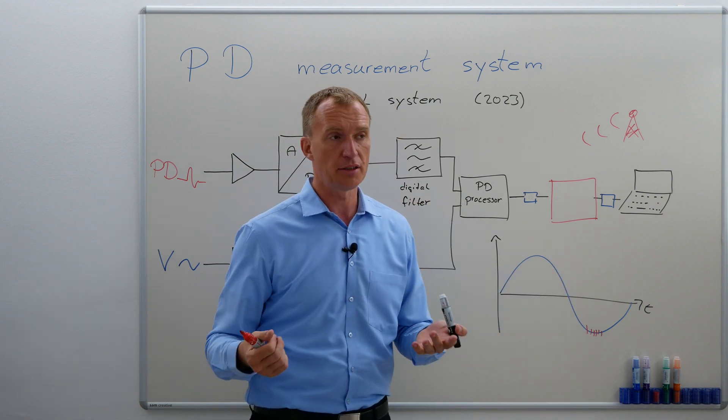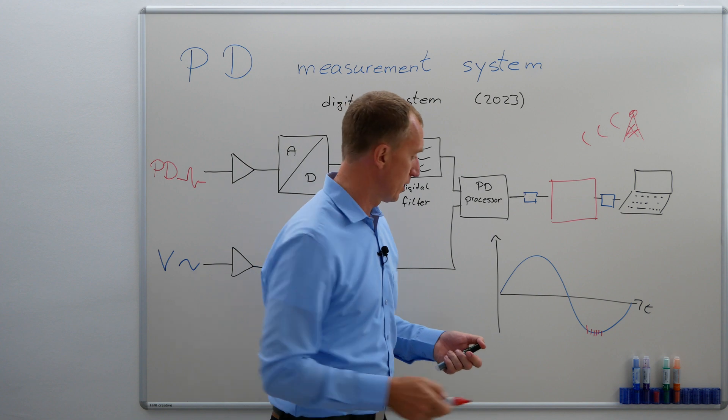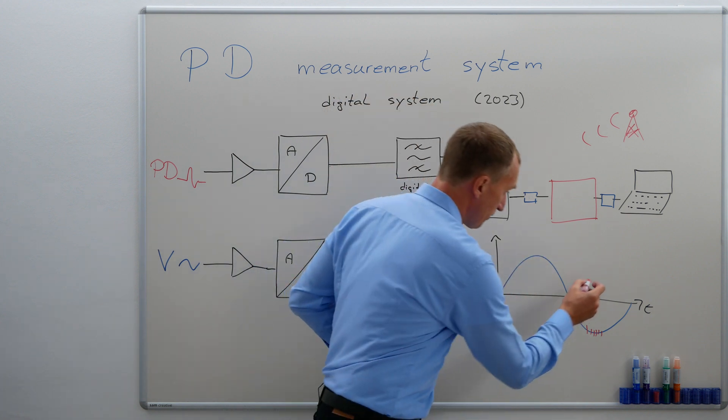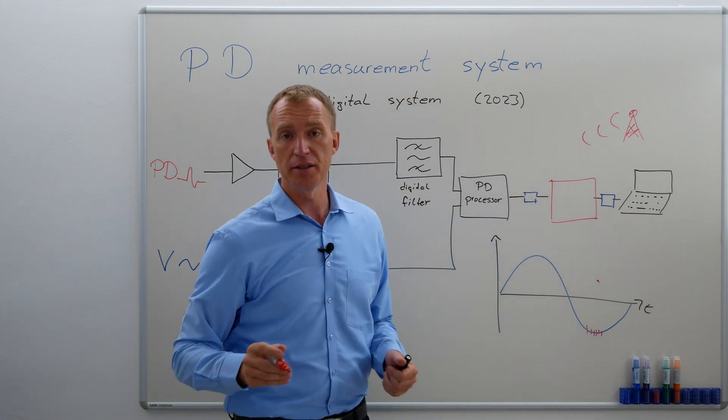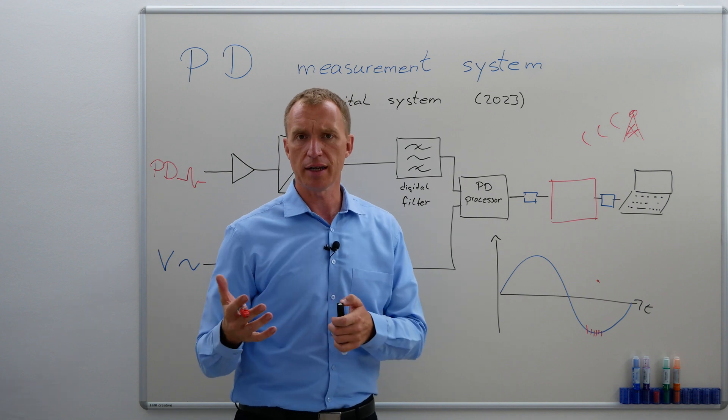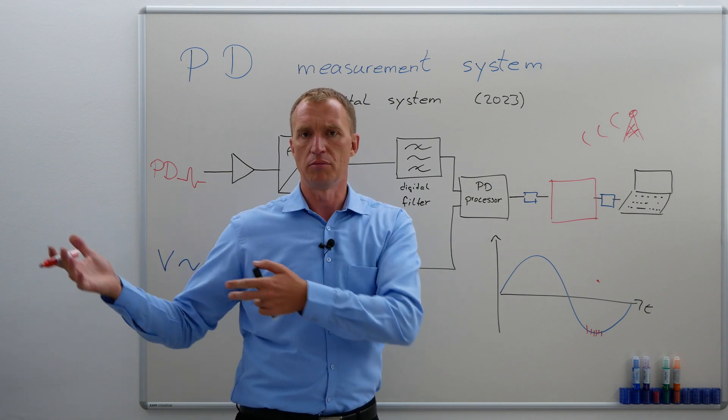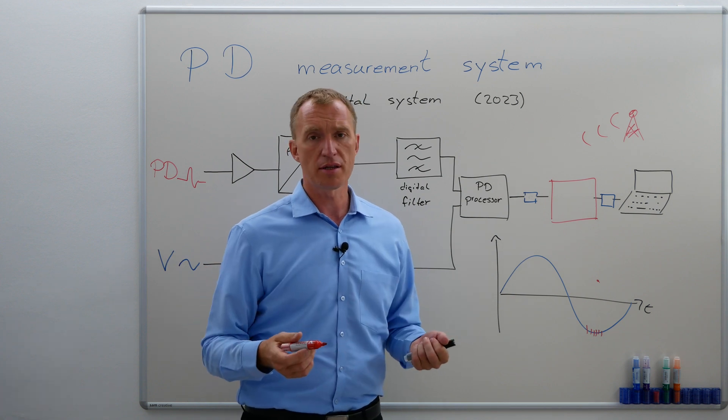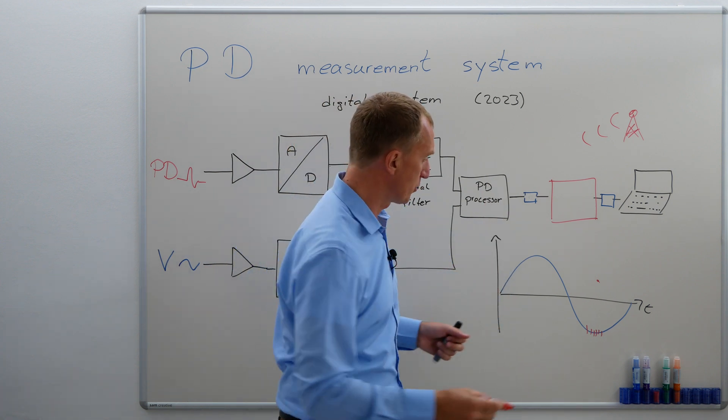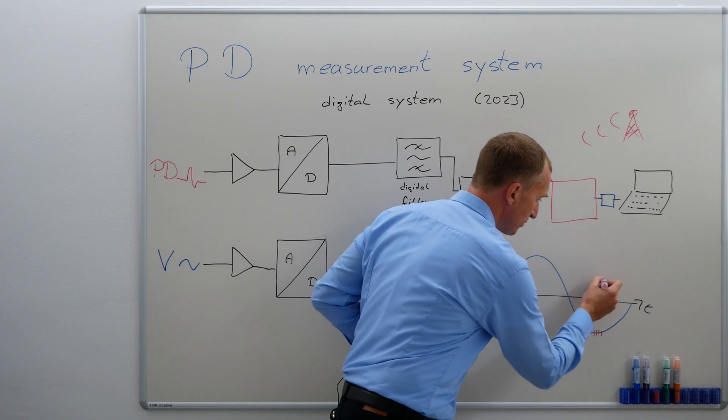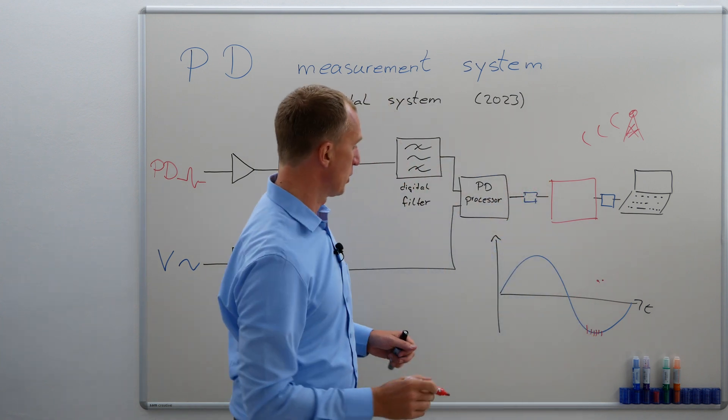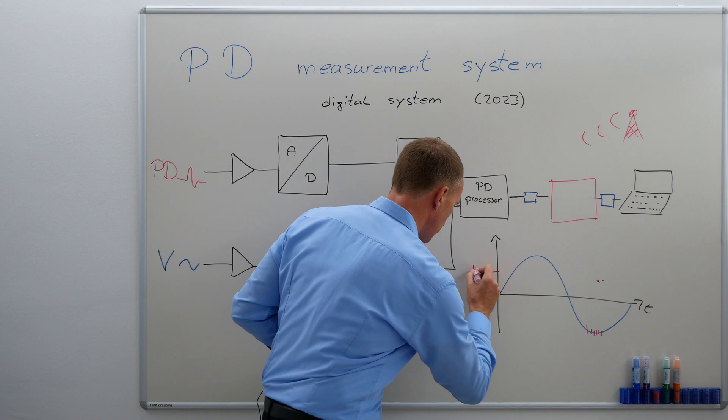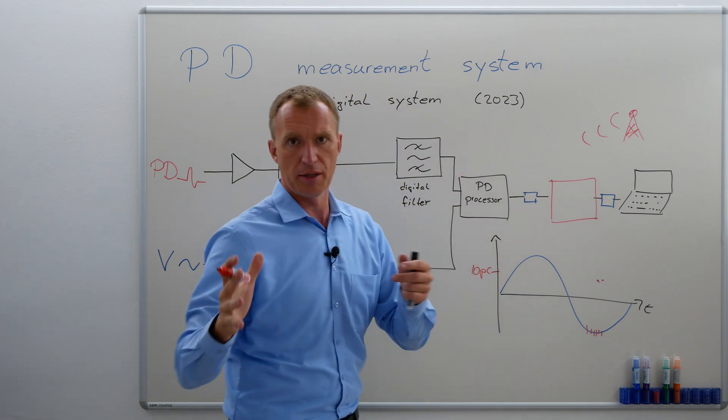So, let's say I have a partial discharge at 270 degrees, and let's say it is 10 picocoulomb. I'm going to have a dot here. And let's say a couple of milliseconds later, or microseconds, or in the next period, I have another partial discharge. And let's say it is 11 picocoulombs. And it's a little bit later. Then maybe you display it like this. So, obviously, this would here be around 10 picocoulombs.